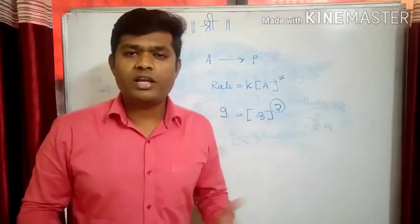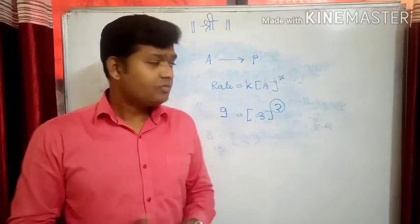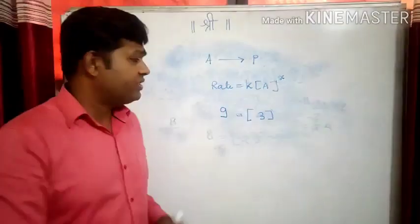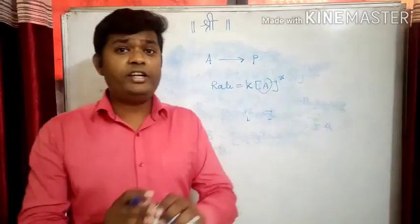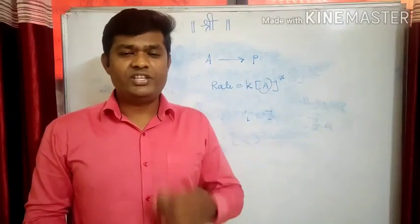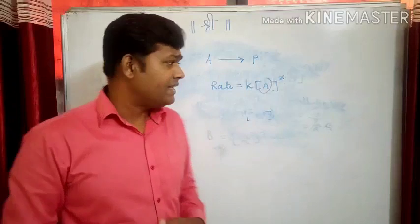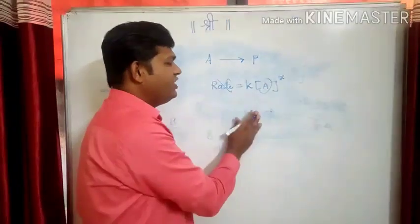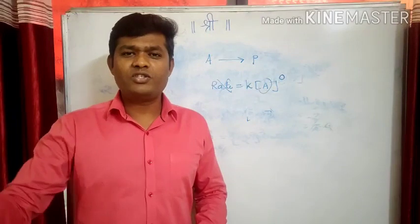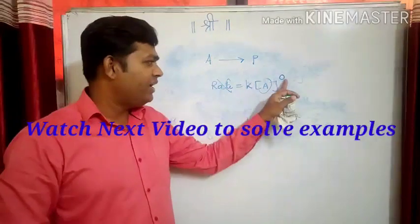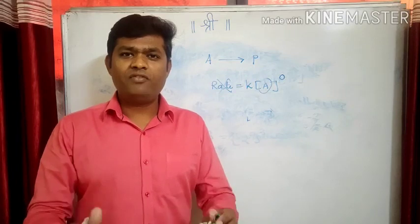In this way, order can be 1, order can be 2, order can be 3, order can be 4 also. Now, if by changing the concentration of reactant the rate does not change, what will be your answer? If there is no effect on the rate of reaction, the value will be 0. If there is no effect of concentration of reactants on the rate of reaction, the power will be 0. We know that anything raised to 0 is 1, so there is no change in the rate of reaction — the rate will remain as it is.